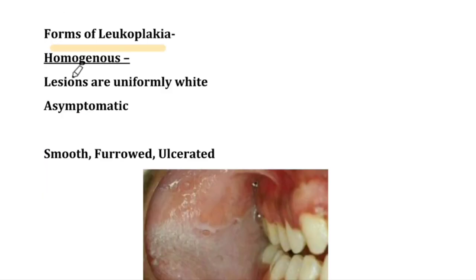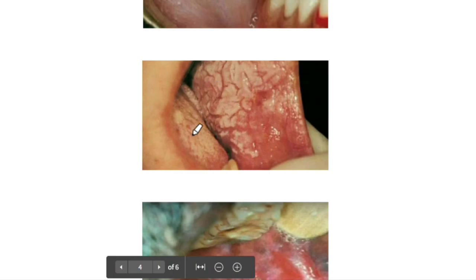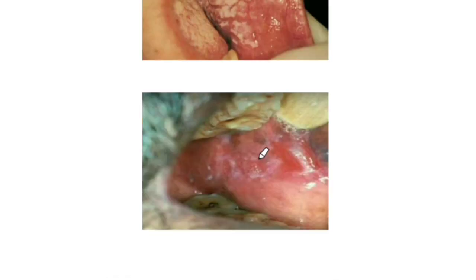There are different forms of Leukoplakia — first is homogenous and non-homogenous. Homogenous lesions are uniformly white and asymptomatic — there is no pain or symptoms. There are also subtypes like smooth, furrowed, and ulcerated. Smooth, furrowed, and ulcerated are all part of the homogenous type.